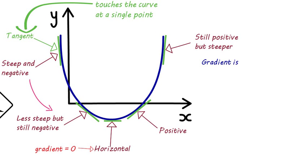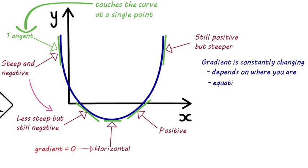So as we can see, the gradient is constantly changing. There is no one value that we can find, and the gradient actually depends where you are on the graph — it depends on the point you are looking at. So the gradient itself is going to be an equation of x. The question is, how do we find that equation if it's not one specific value? To have a look at how we can go about finding that equation, I'm going to look at an example.